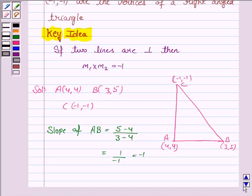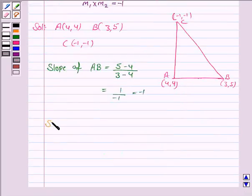Now, we find the slope of the line AC. This is given by minus 1 minus 4, that is Y2 minus Y1, upon X2 minus X1, that is minus 1 minus 4. And this is equal to minus 5 upon minus 5, that is equal to 1.